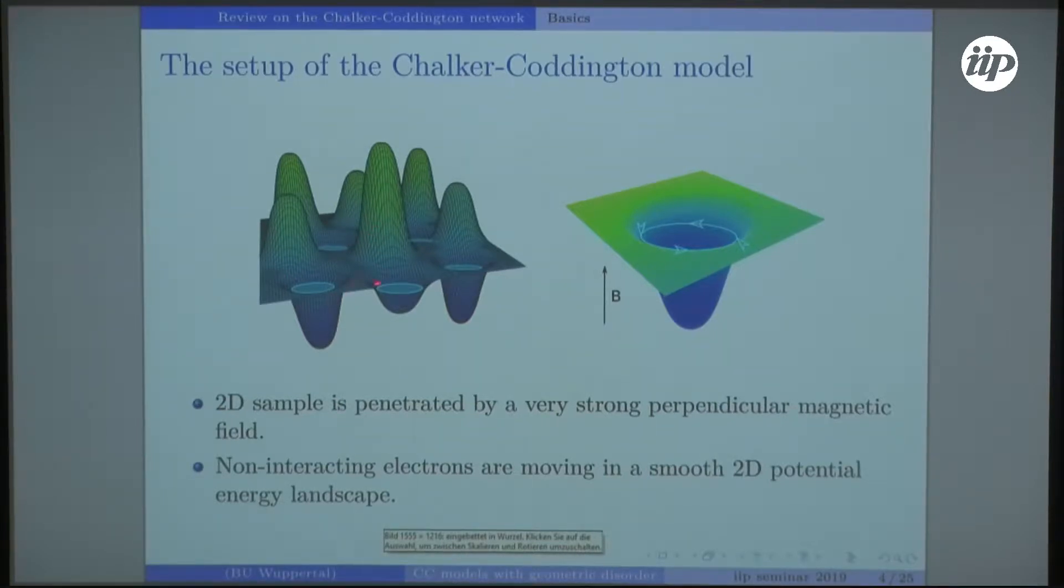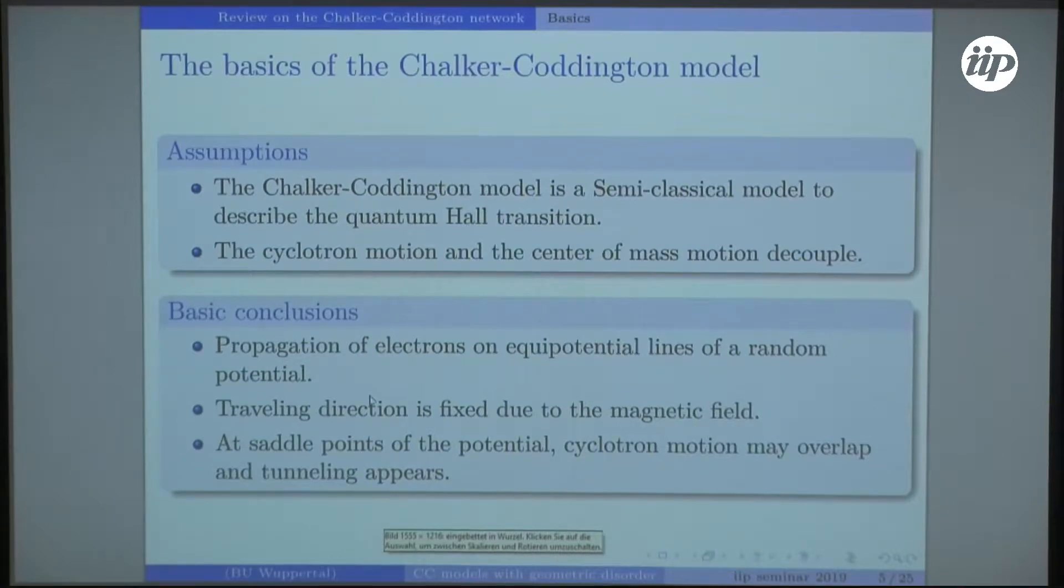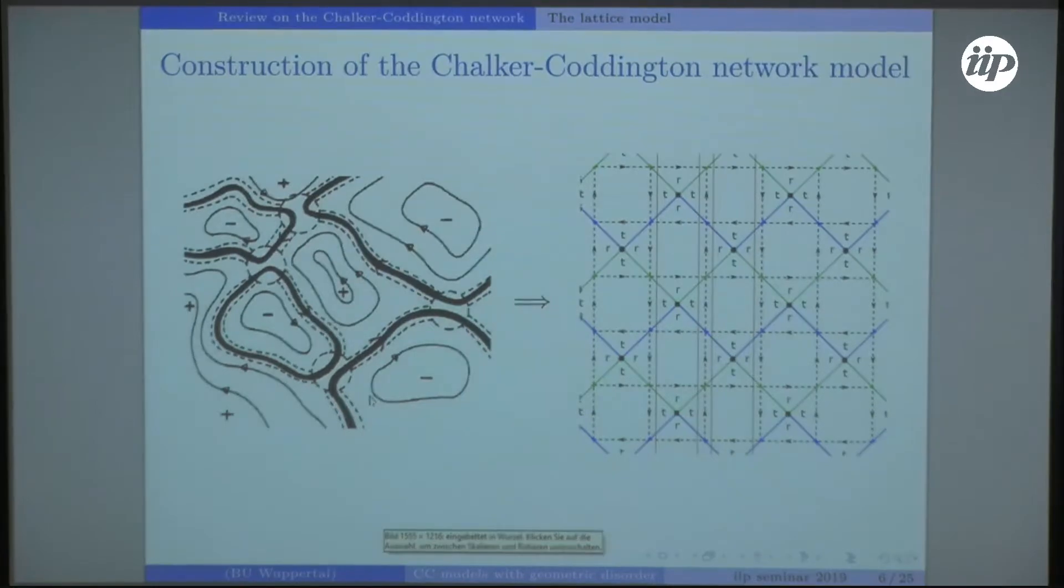When two valleys are close to each other, tunneling might appear and the electron moves from one to the other. We want to formalize this and come to the network model.